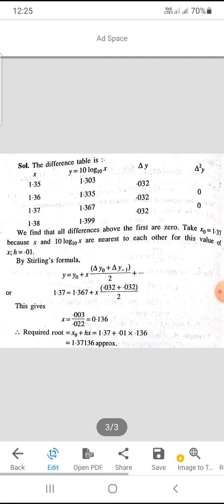We can say that 1.37 = 0.1367 + x(0.032 + 0.032)/2. This gives x = 0.136. So the required root will be x₀ + hx, which is 1.37 + 0.01(0.136) = 1.37136.